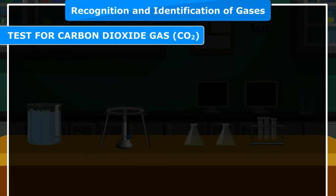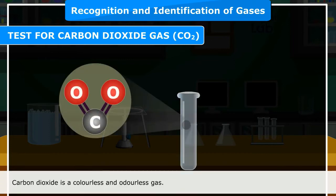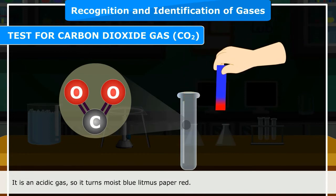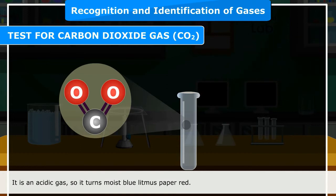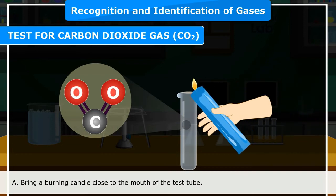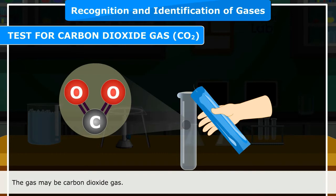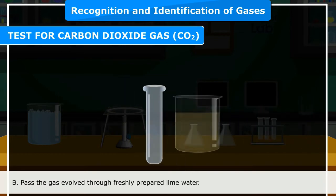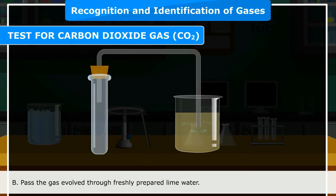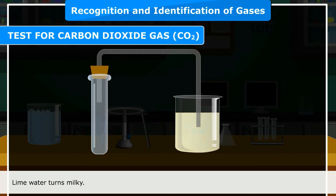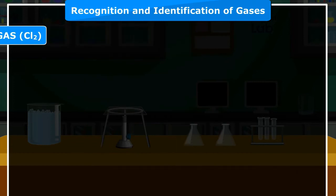Test for carbon dioxide gas (CO₂): Carbon dioxide is a colorless and odorless gas. It is an acidic gas, so it turns moist blue litmus paper red. Confirmatory test A: Bring a burning candle close to the mouth of the test tube — the candle is extinguished. Confirmatory test B: Pass the gas through freshly prepared lime water; lime water turns milky. This confirms that the gas is carbon dioxide.